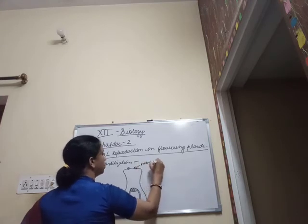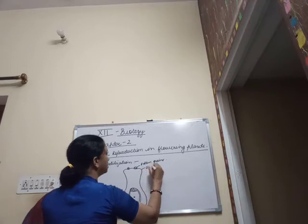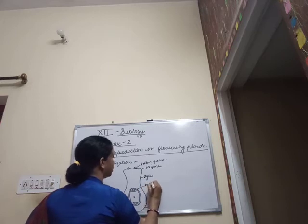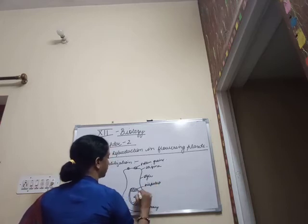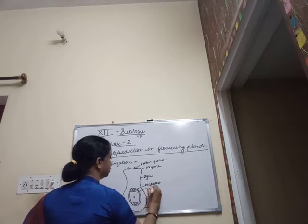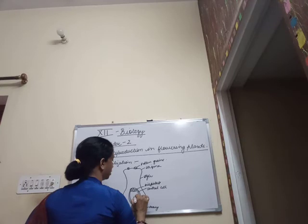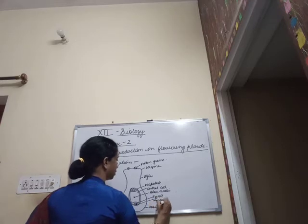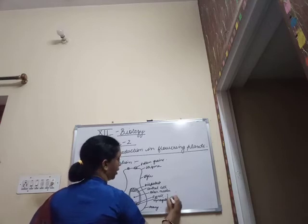These are the pollen grains. This is the stigma. This is the style. This is the ovary. These are the antipodals, or antipodal cells. Then this is the central cell. These are the polar nuclei. Then this is the egg cell. And these are the two synergids, which eventually form the egg apparatus.